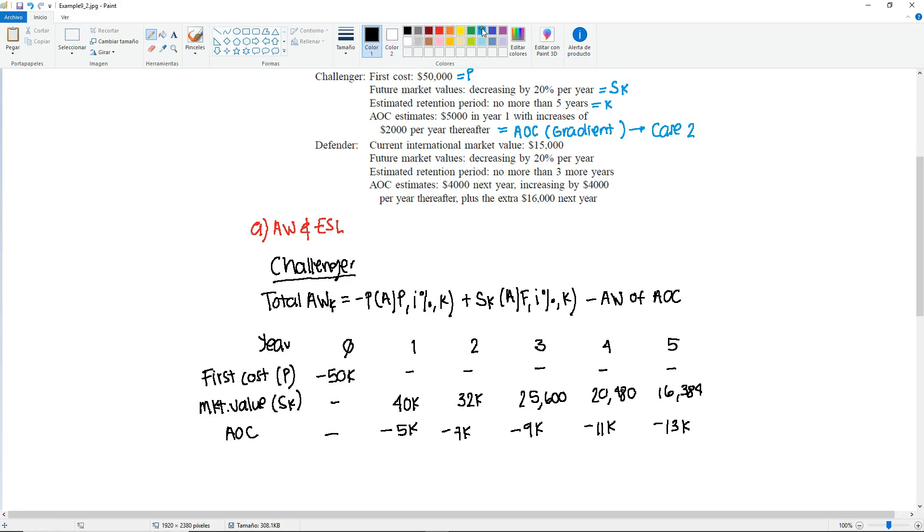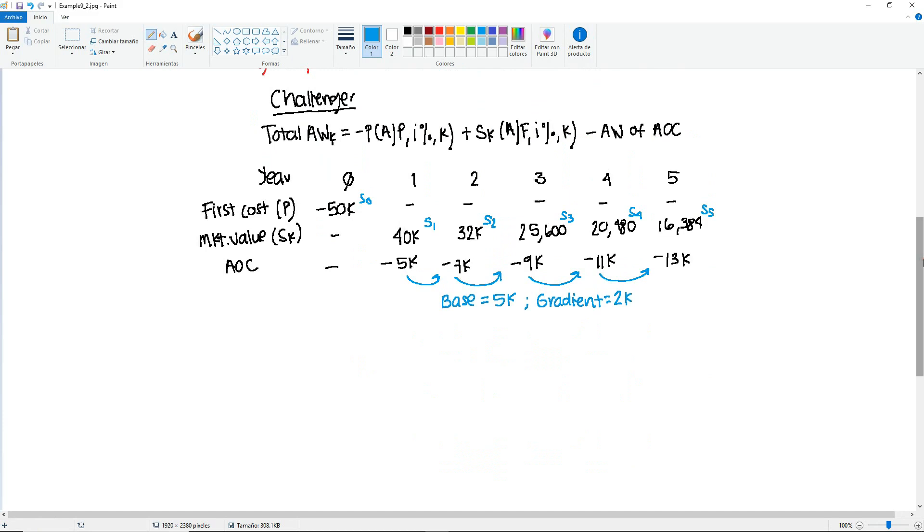So just let me point out what we have here. Remember that we mentioned that this is going to be S1, S2, S3, S4, and S5. And sometimes in other problems, you will see that they just have one row for both the first cost and the market value. So this will be your S0, as mentioned also in the previous example. Then from here to here to here to there, year to year, we have a base of 5,000 and the gradient will be 2,000. So now let's start getting the annual worth for each and one of the years.